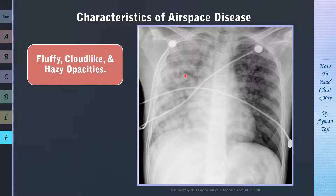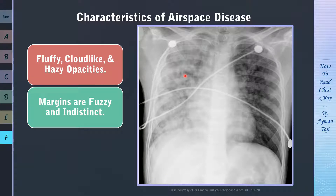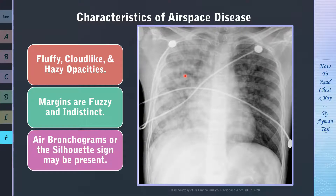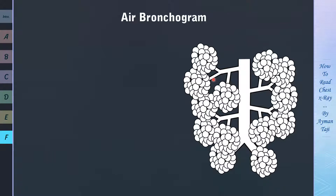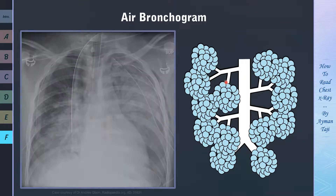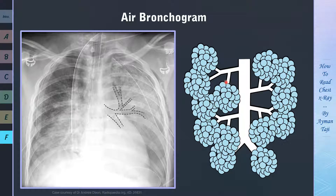Another characteristic is that the margins are indistinct, meaning it's frequently difficult to identify a clear demarcation point between the disease and the adjacent normal lung. Also, airspace disease may contain air bronchograms. Normally, bronchi aren't visible on X-ray because they contain air and are surrounded by alveoli also full of air, and the walls of bronchi are very thin. But when fluid or soft tissue replaces the air surrounding the bronchus, the air inside becomes visible as a series of branching tubular structures — this is called the air bronchogram. Here we can see a nice example of extensive air bronchograms in the left lung.